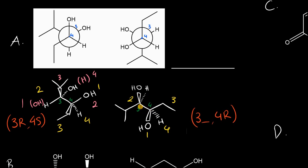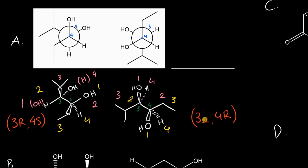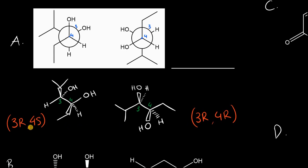At carbon 3, the same story: OH takes first priority, hydrogen takes last. Comparing the isopropyl group to the other substituent, the isopropyl is inferior due to the first point of difference rule, so it takes third priority and the other group takes second. Drawing the arrow from 1 to 2 to 3 is clockwise, giving 3R. Comparing the chiral centers: 3R,4S versus 3R,4R — they differ at one chiral center, so these two compounds are diastereomers.